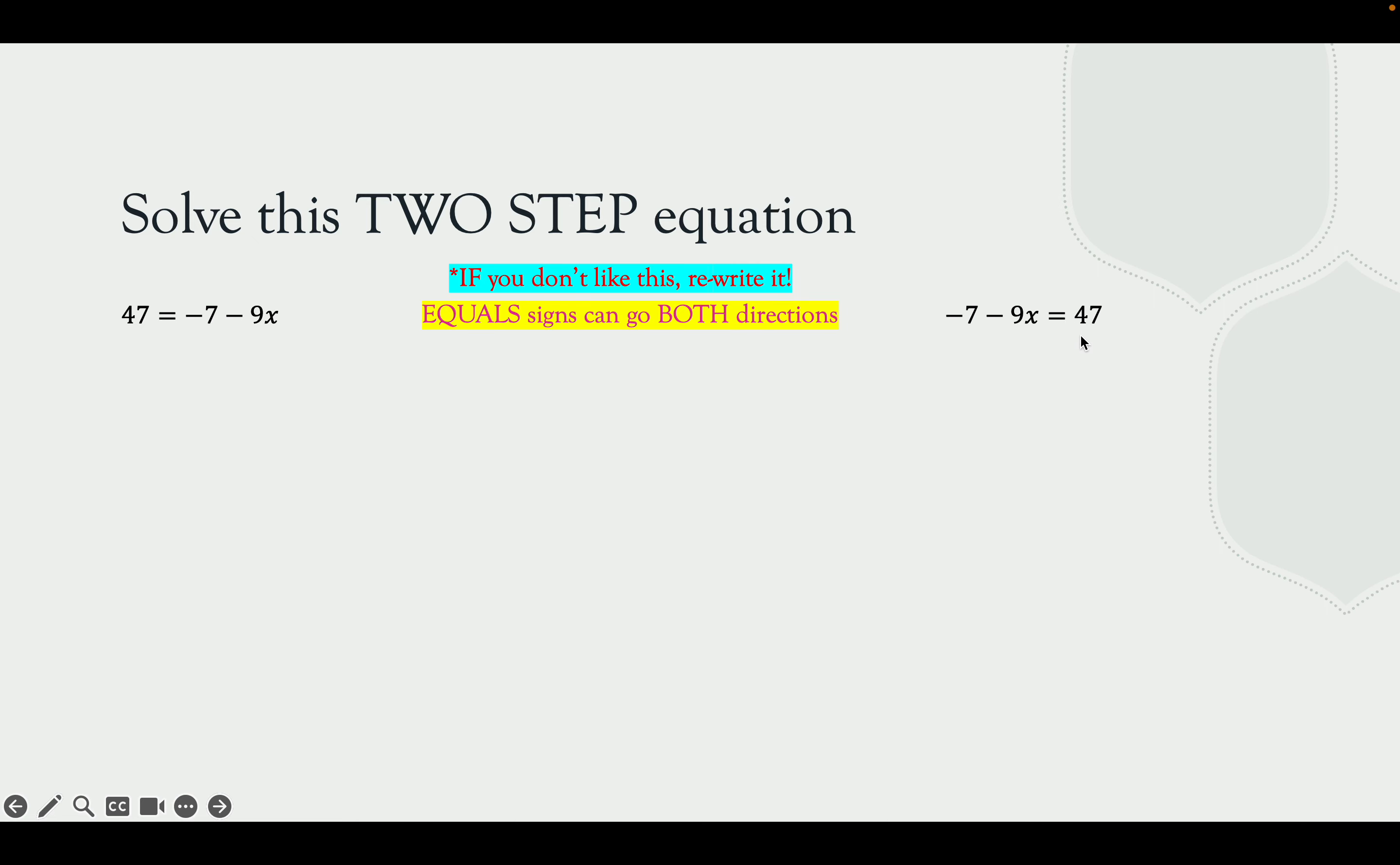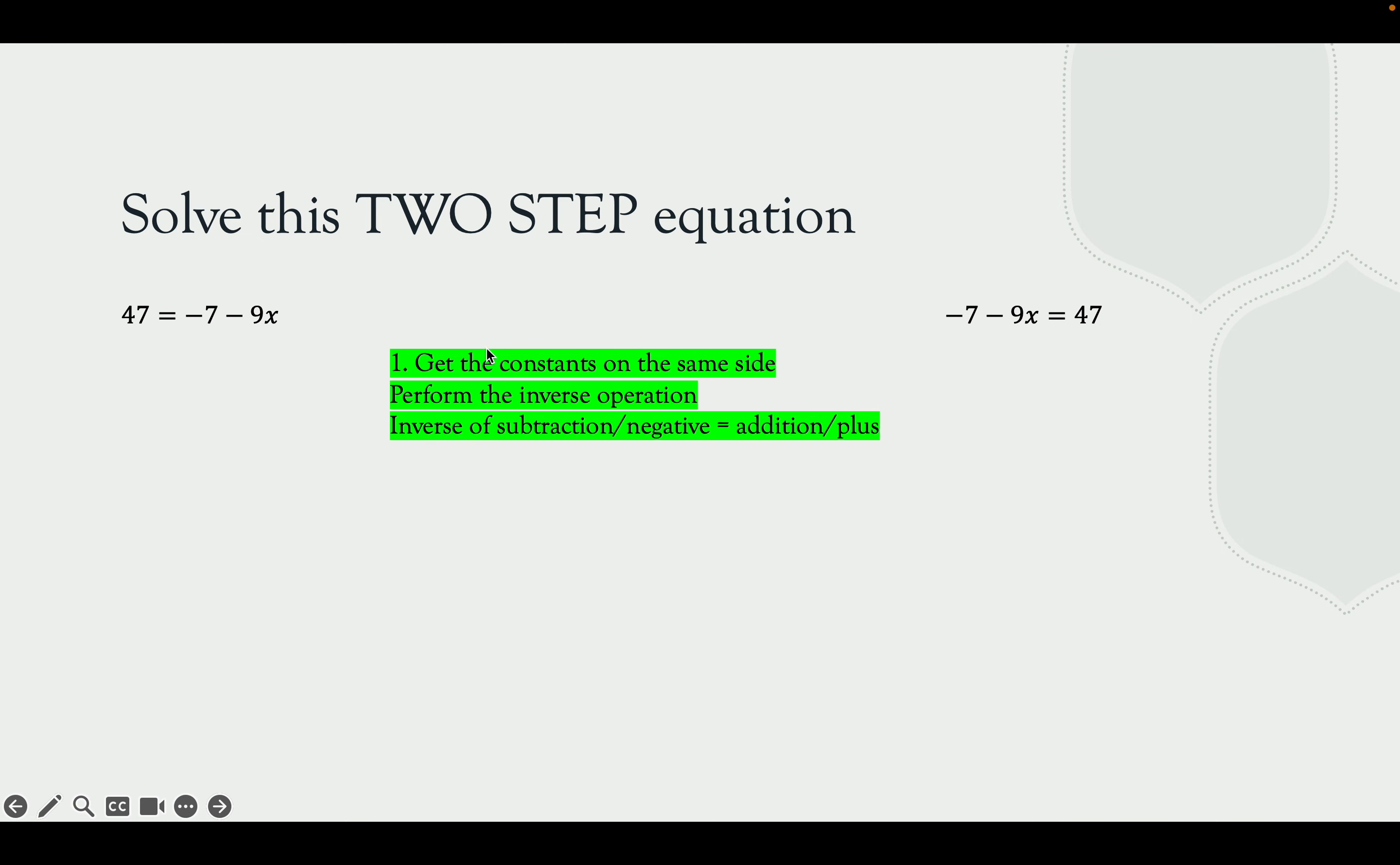I'm going to solve these side-by-side to show you that it does not matter which side the x is on. Step one, we need to get the constants on the same side by performing the inverse operation. The inverse of subtraction is addition, and the inverse of addition is subtraction. We have a negative 7, so the inverse is going to be adding. So we're going to add 7 to both sides, and we would end up with, on this side, we have 54 equals negative 9x. The only difference here is the x is on the left side, negative 9x equals 54.